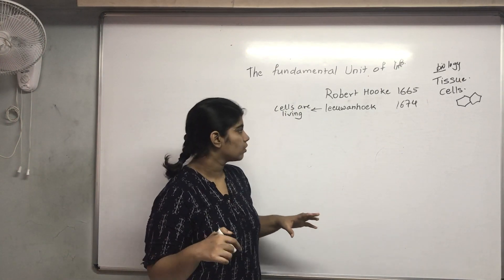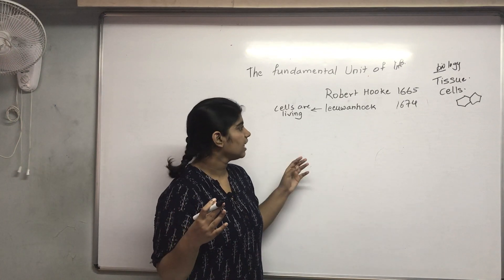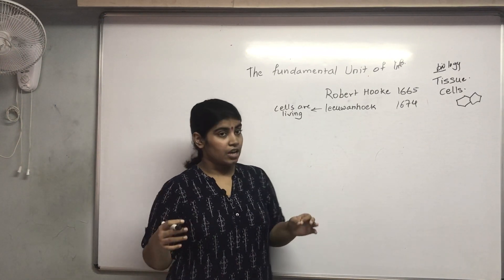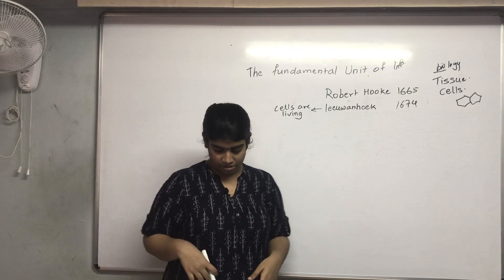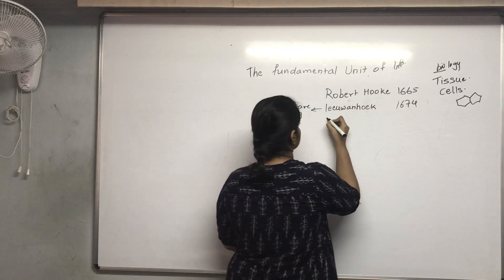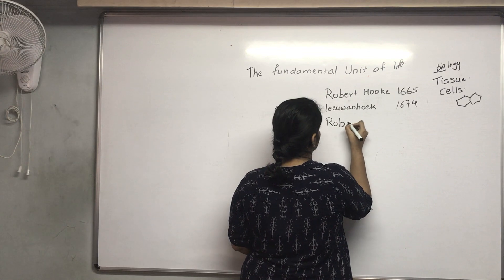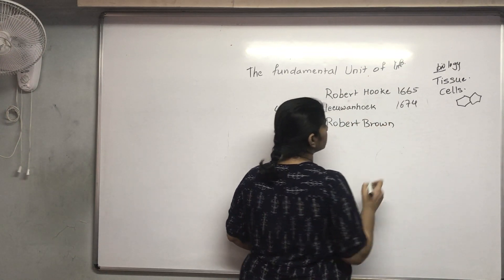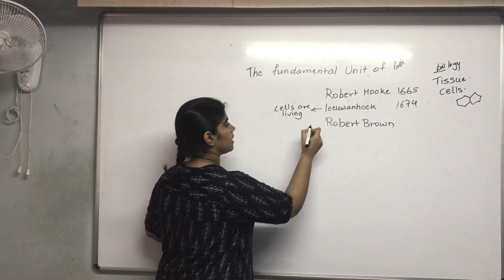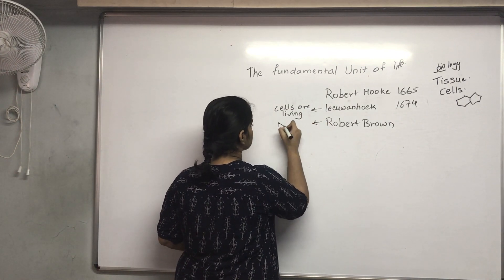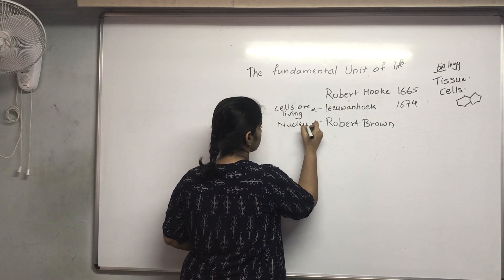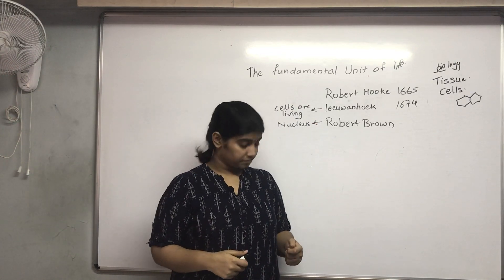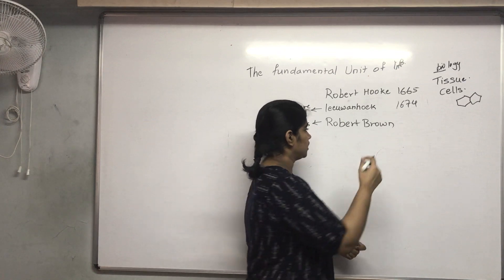As you know, a cell has a middle portion known as the nucleus. There was another scientist named Robert Brown who discovered the nucleus present in living cells in the year 1831.